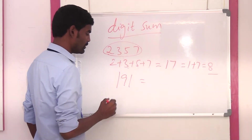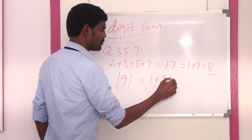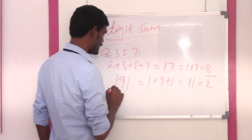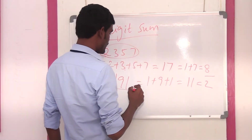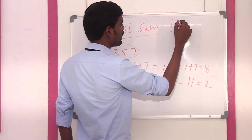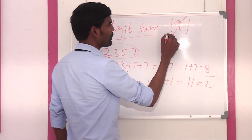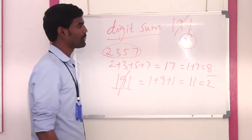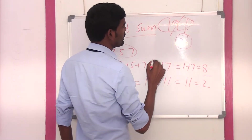191: 1 plus 9 plus 1 is equal to 11. So the digit sum of 191 is equal to 2. Here we can neglect the 9. So 1 plus 1 is 2. Directly we can get the digit sum. So digit sum of 191 is 2.